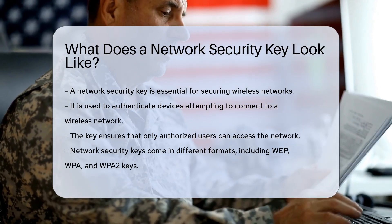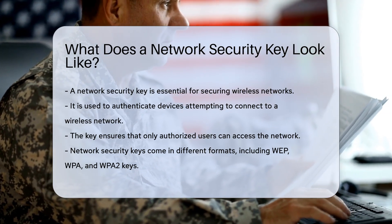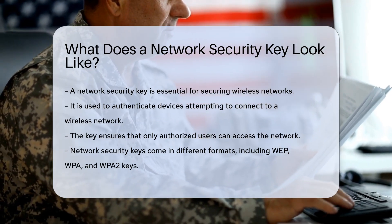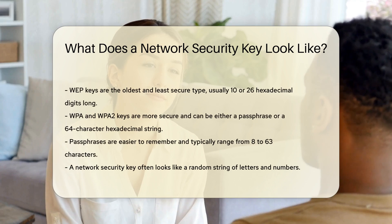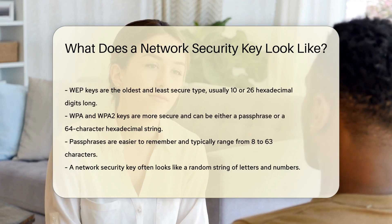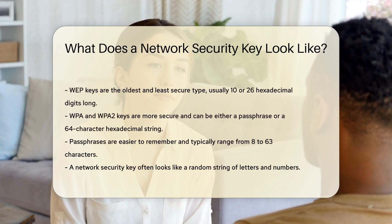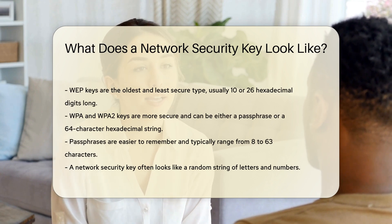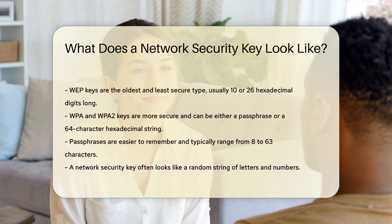Network security keys come in different formats. The most common types are WEP, WPA, and WPA2 keys. WEP keys are the oldest and least secure type, usually 10 or 26 hexadecimal digits long. WPA and WPA2 keys are more secure and can be either a passphrase or a 64-character hexadecimal string.